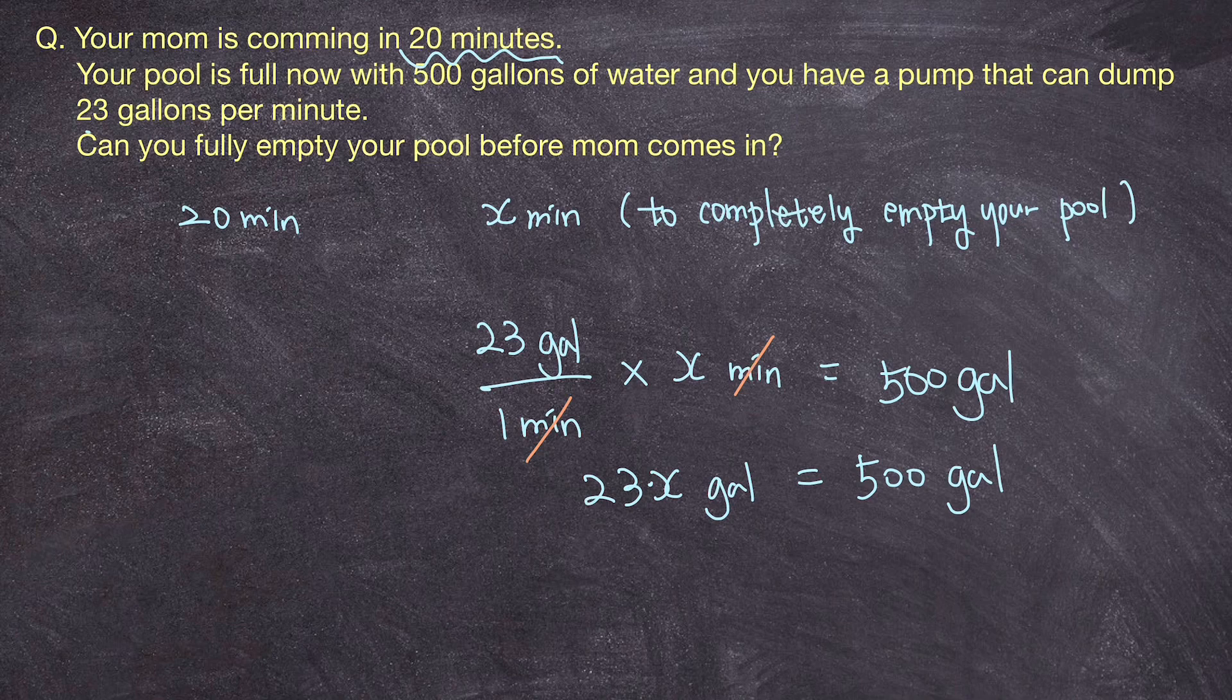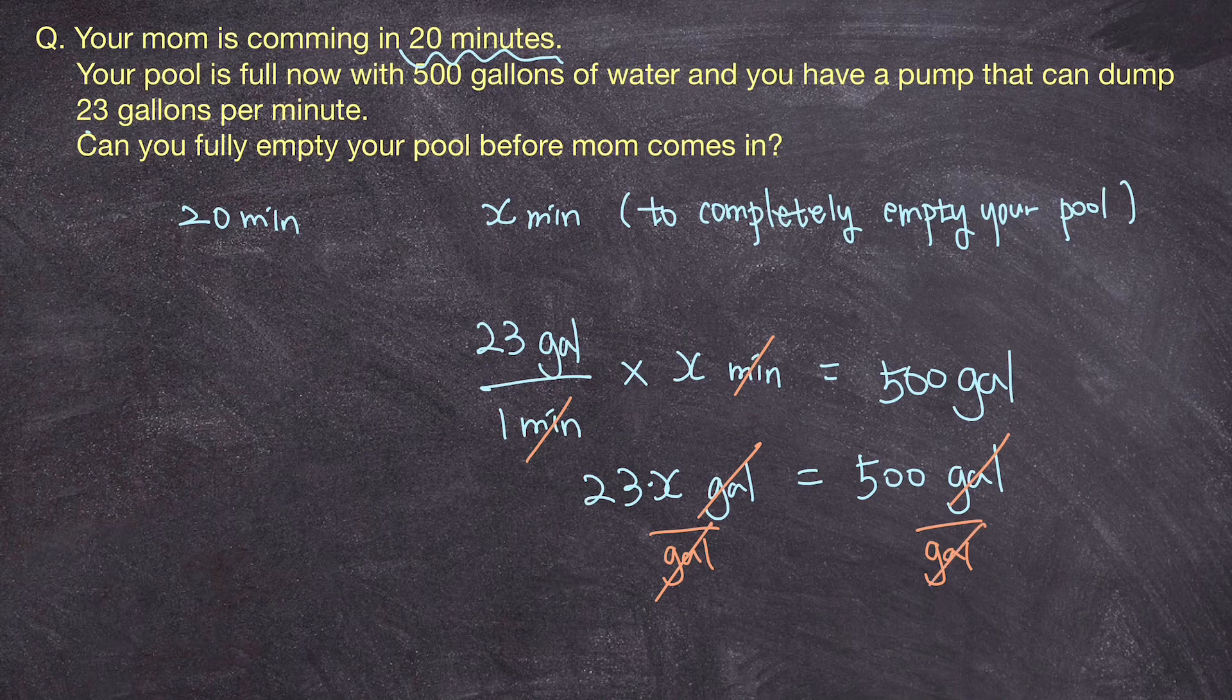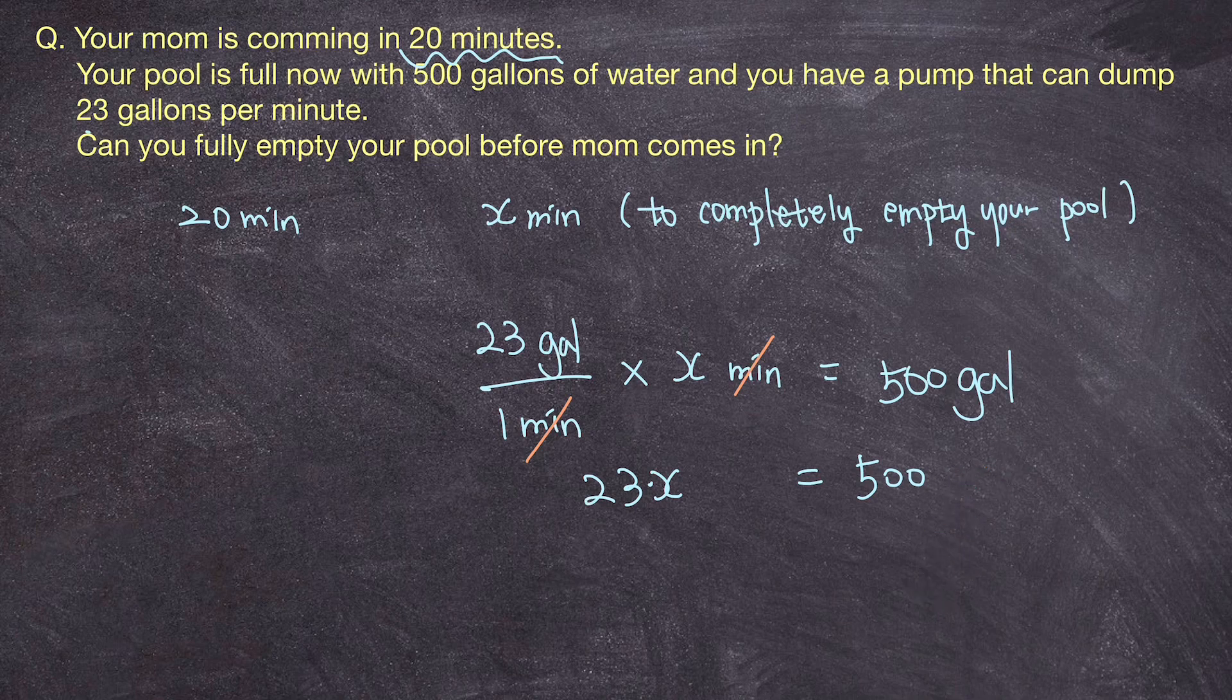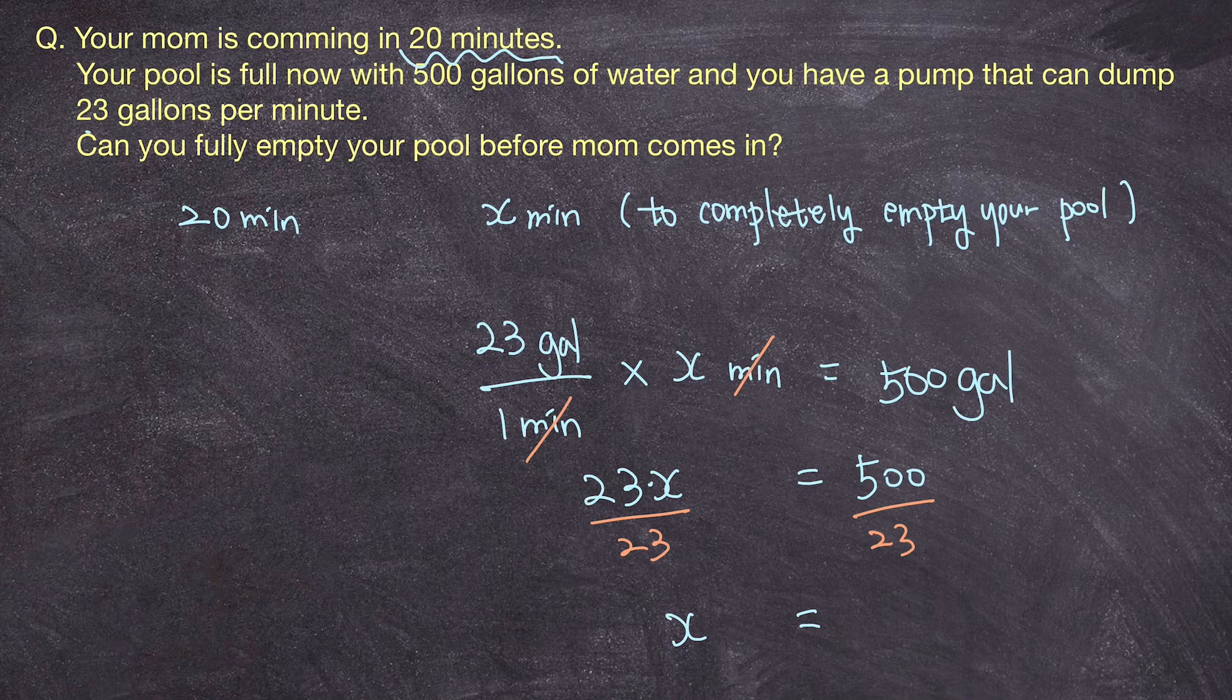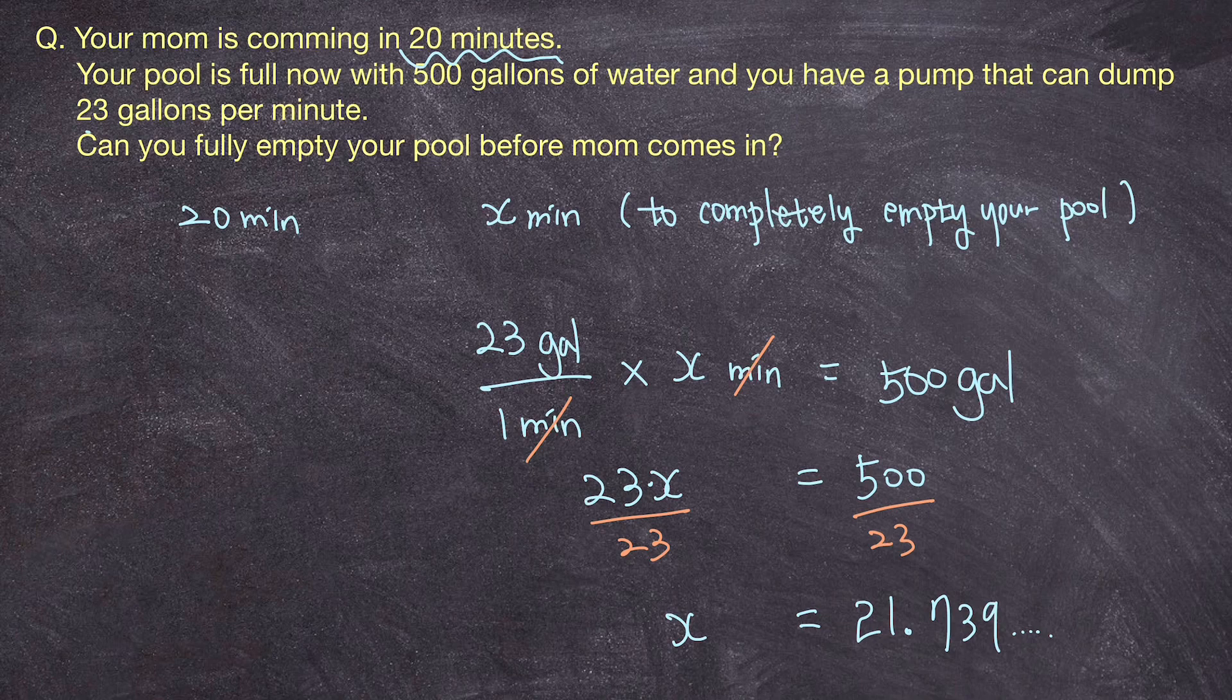Now, another tip or trick that I can pull off right here is to divide both sides with a unit of gallon so that I can just cross out the unit of gallon and be left with 23x is equal to 500. Now, all there is left for me to do is divide both sides with 23 to end up with my x which is equal to 500 over 23 which is equal to 21.739 something something which means it'll take slightly more than 21 minutes for me to completely empty my pool with a pump that empties 23 gallons in one minute.